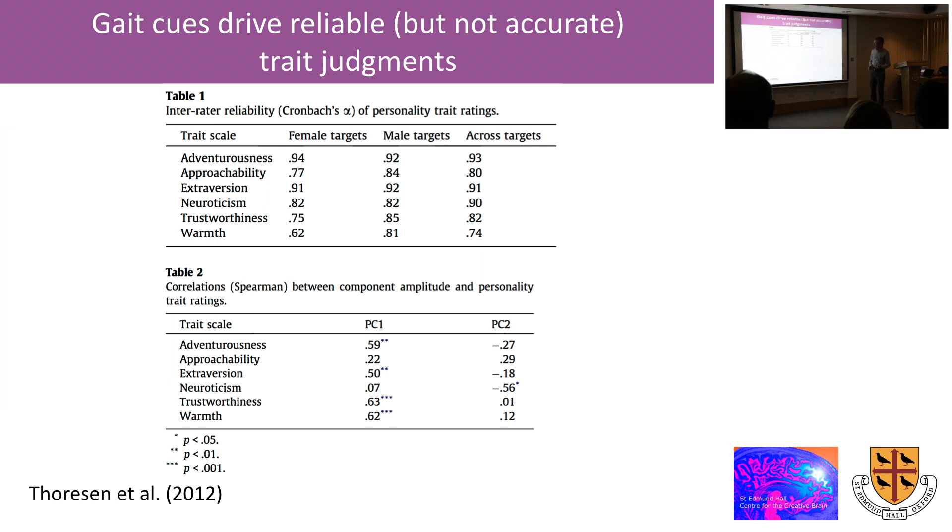But what we did was then do some statistical analysis of the motion of the dots over time in these point light displays of these gaits. We found some so-called principal components in the principal components analysis that we did that seemed to correlate with the observer's ratings of the personality traits. So the first principal components of the motion seemed to correlate quite highly with some of the traits particularly adventurousness, extroversion, trustworthiness, and warmth.